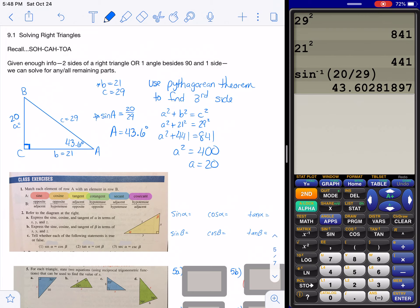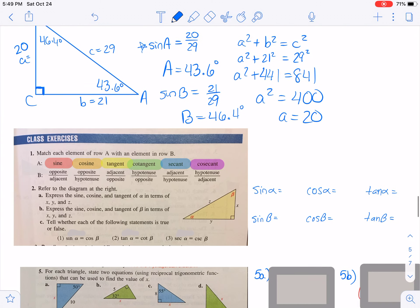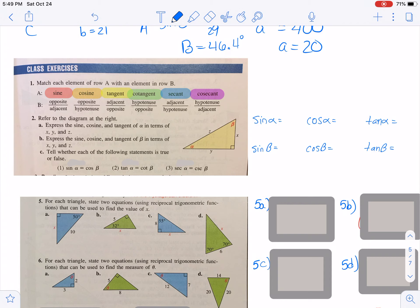So let's do the sine then of B. And that would then be 21 over 29. So we'll do inverse sine of 21 over 29. And that is 46.4. So 46.4. And those, if you do add them together, would give you 90. And so we can do that kind of as a check, too. All right, let's do some class exercises. And then I do have another example for you that is a little bit more complicated.